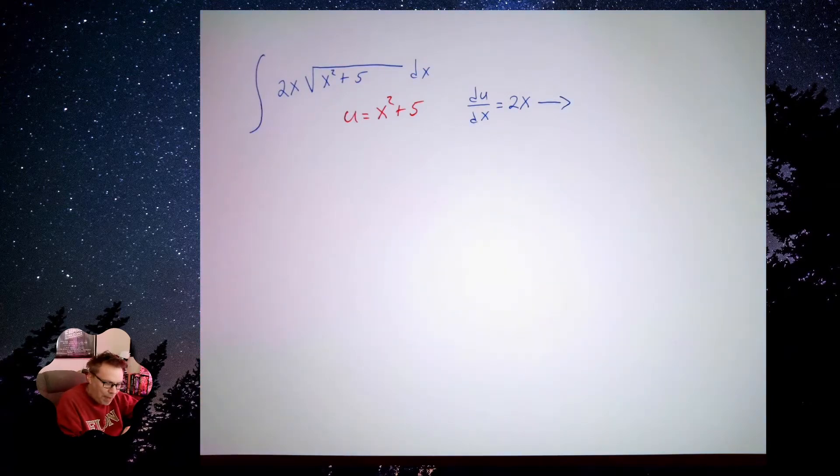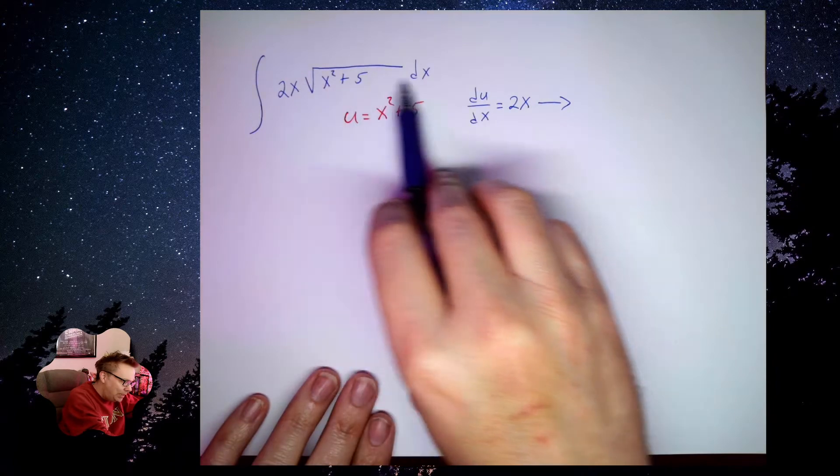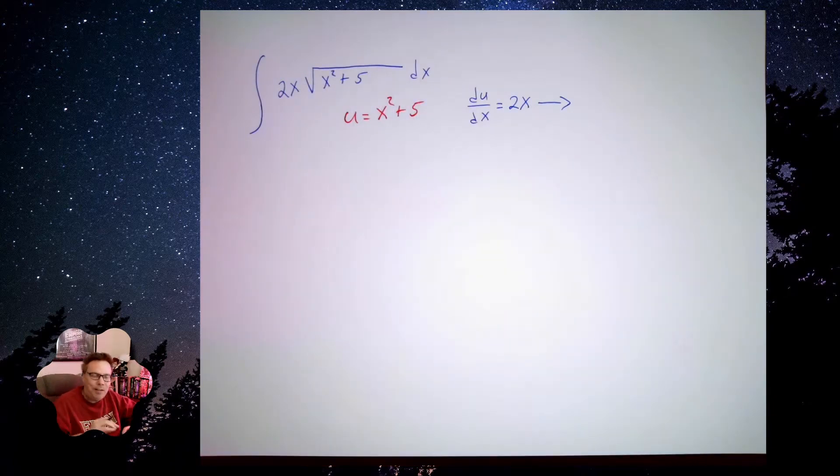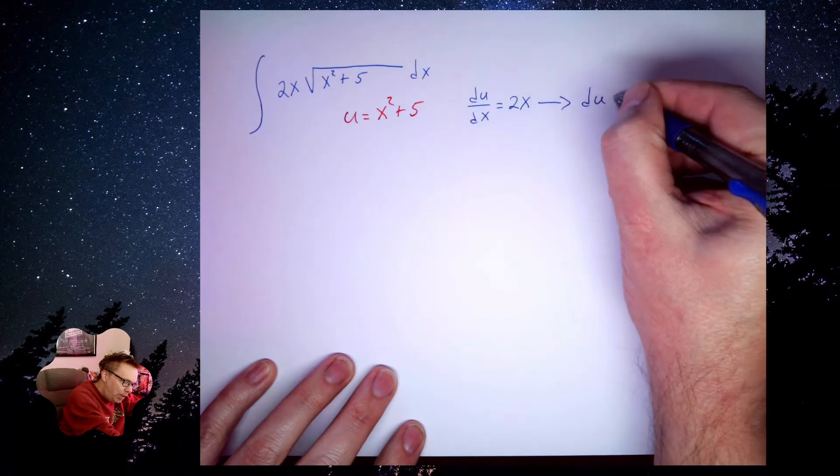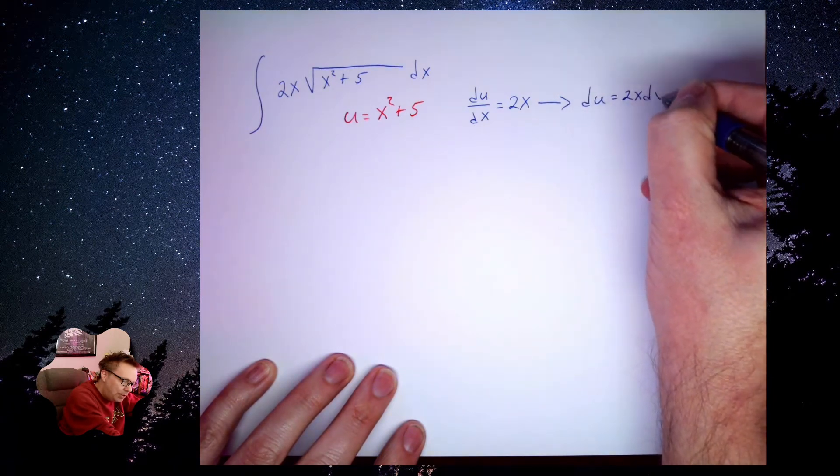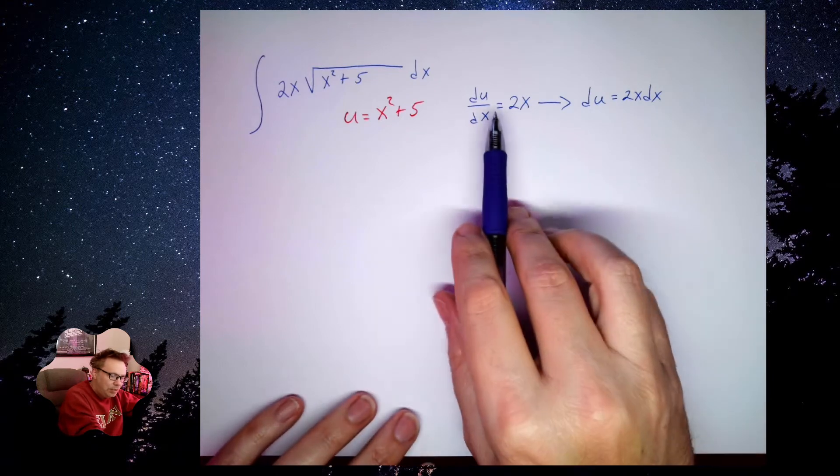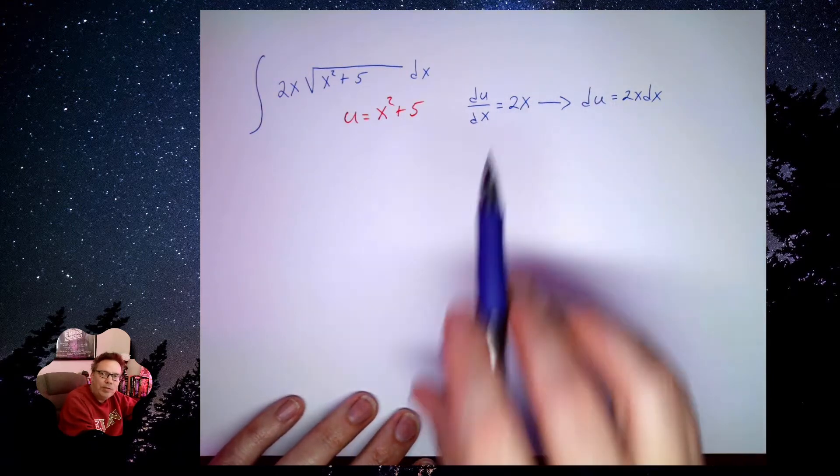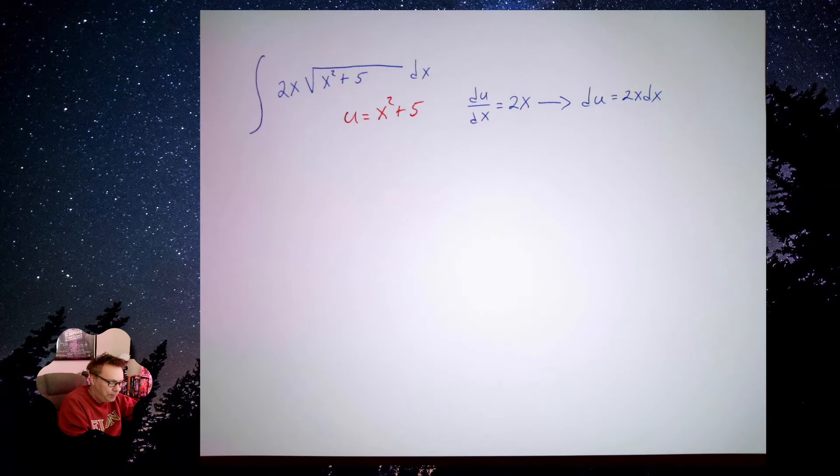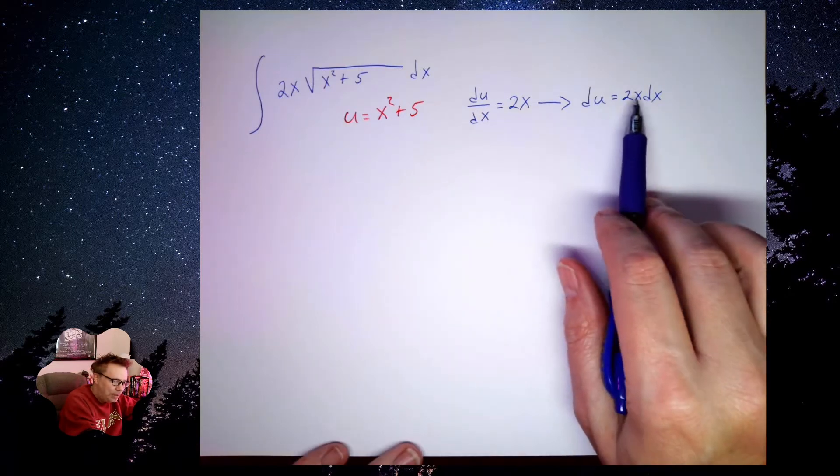So to make a true substitution, everywhere I see x's, I got to get rid of all that. So I'm going to do this by writing du equals 2x dx. In other words, I'm writing the differential form of this derivative.